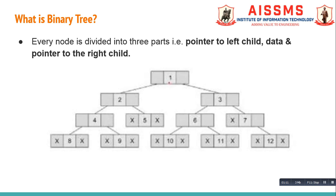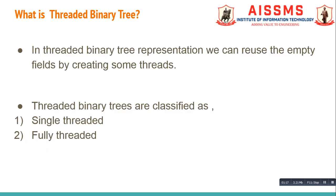Every node is divided into three parts: data, pointer to the left child, and pointer to the right child. When there is only one child node or no child node, the left and right pointer spaces remain null. The main idea behind threaded binary tree is instead of keeping that space null, it is good to keep some useful information — specifically, information about the immediate parent. The pointer which stores this information is known as a thread. Threaded binary trees are further classified as single threaded binary trees and fully threaded binary trees.